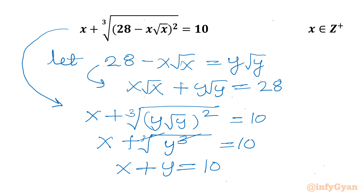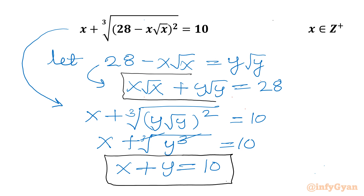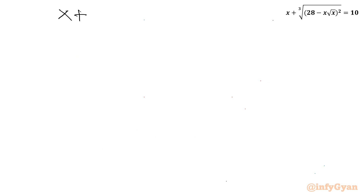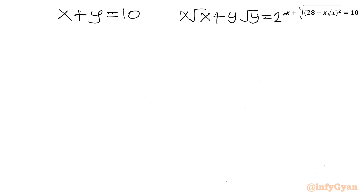So we have got a new system of two equations: the first equation is x plus y equal to 10, and the second equation is x√x plus y√y equal to 28.